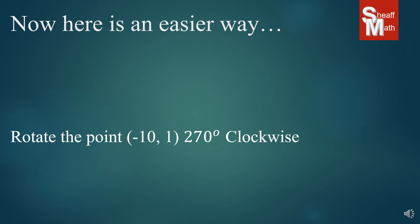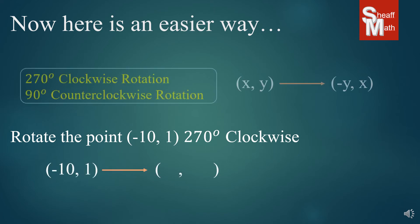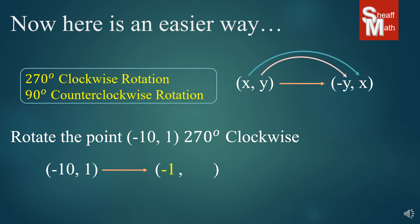Let's say you were asked to do a rotation of the point (negative 10, 1) 270 degrees clockwise. We get our rule for the 270 degree clockwise rotation. The y value is going to go to the first position and turn opposite, and negative 10 is going to go to the second position and stay the same. I would never ask you to memorize all these — we're going to give you the rule list a little later.